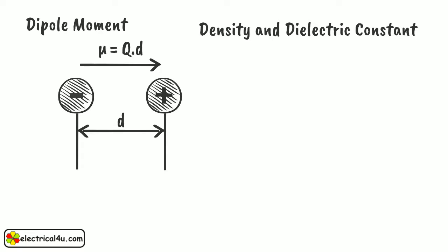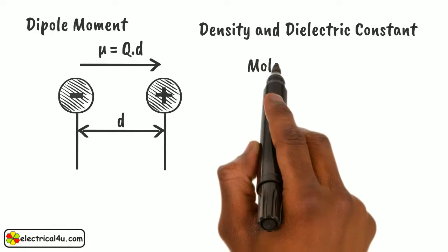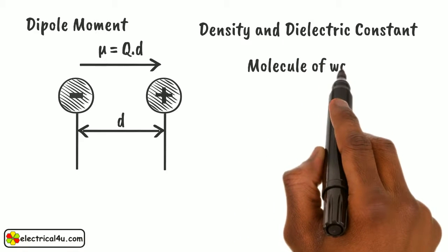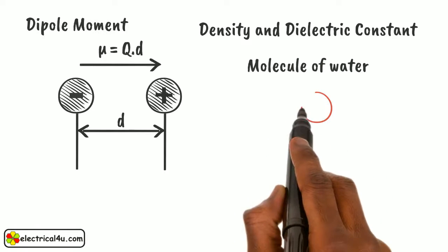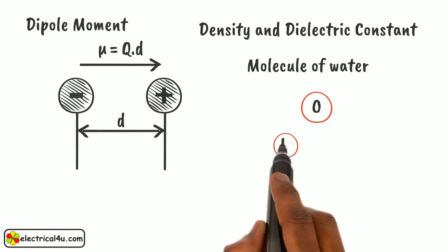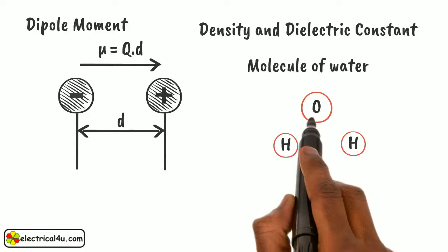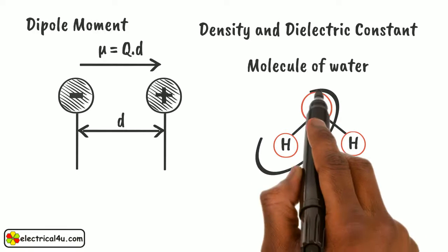Dipoles may be present in the materials due to structure of molecules. For example, let us take a molecule of water. This is oxygen atom. These are hydrogen atoms, attached to the oxygen atom. Water molecule is bent structured.